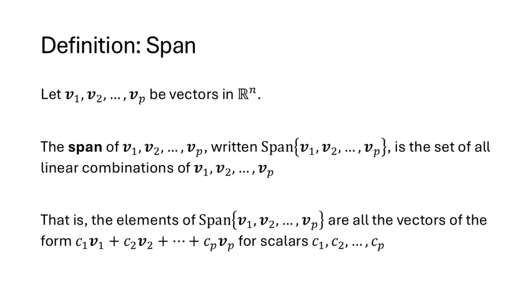Here's the definition of span. If we have a collection of vectors in Rn — where p tells us how many vectors we have and n tells us how many entries those vectors have — we can construct the span of that set of vectors. We write this as 'span' followed by the set of vectors, and that represents the set of all possible linear combinations of v1, v2, up through vp, where the c's are scalars.